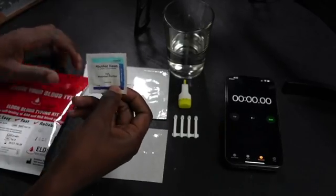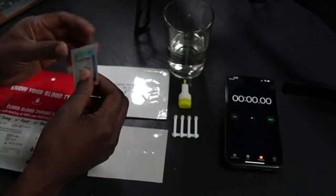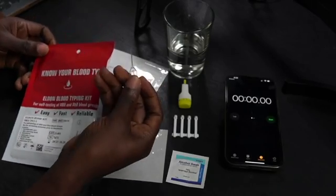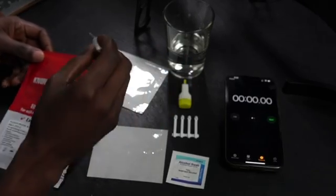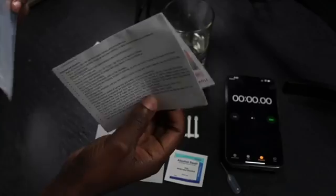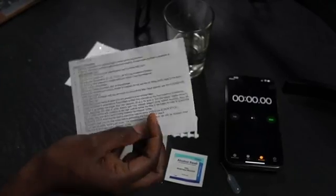Then we have an alcohol swab to sterilize your finger before we puncture the skin. And then we have this little plastic pipette. This is what we're gonna be using to put little drops of water on the card. And the last thing we have inside are the instructions. We don't need these instructions because I'm gonna show you how to do it, but I do recommend for you to read the instructions if you're doing this yourself.